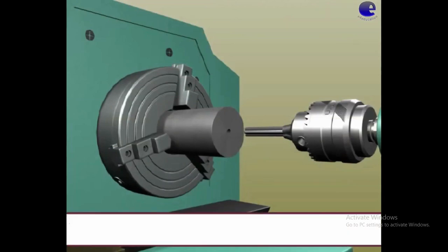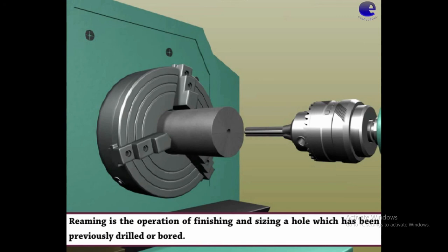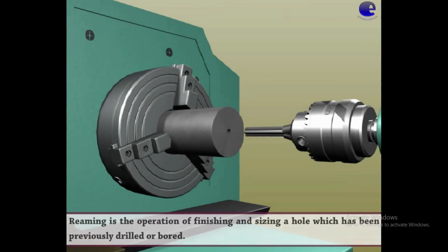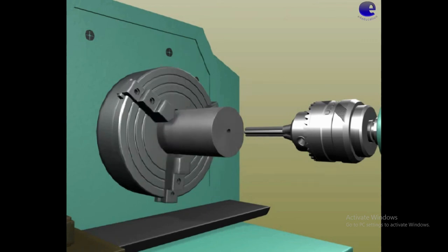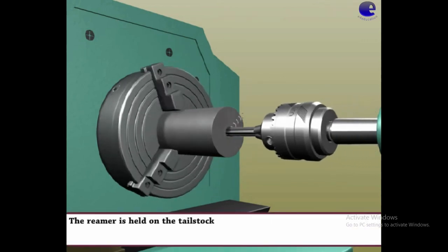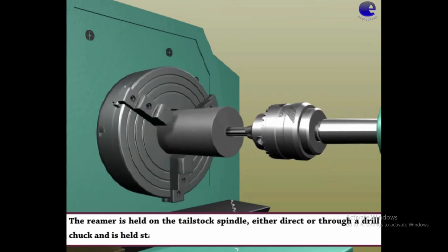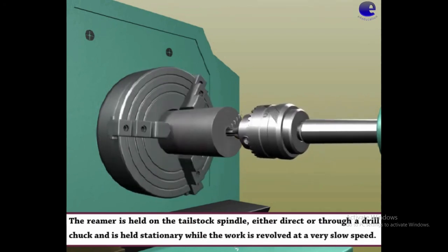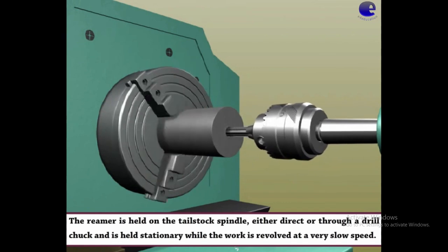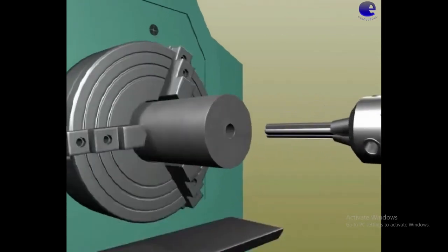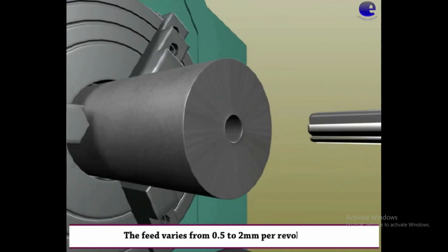Next, reaming operation — this is the finishing of an undersized hole which has been previously drilled or bored. After drilling or boring, we perform the reaming operation. The reamer tool is held in the tailstock spindle, either directly or through a drill chuck. It is held stationary while the work is revolved at very slow speed. The feed varies from 0.5 to 0.2 mm per revolution — thus reaming is done.